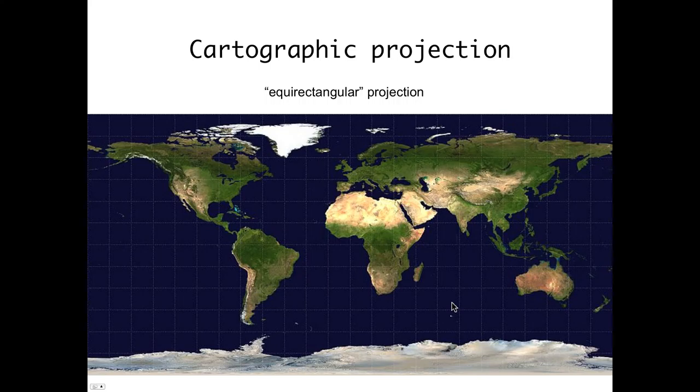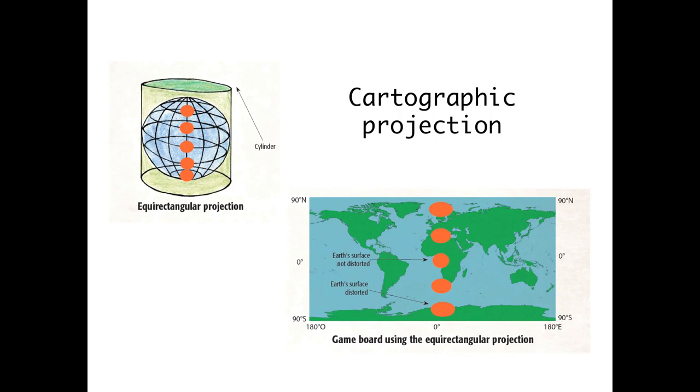We have used the equirectangular projection. Using this projection, some parts of the Earth's surface are more distorted than others. The Earth is projected on a cylinder, the spacing between latitudes and longitudes being the same over the entire map.